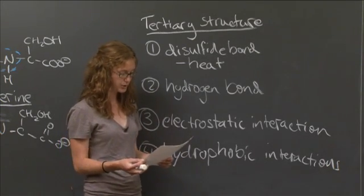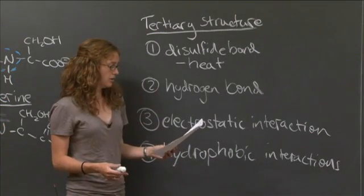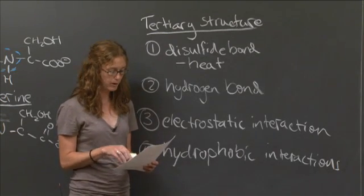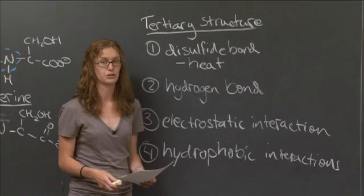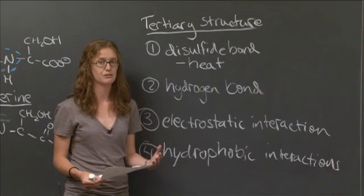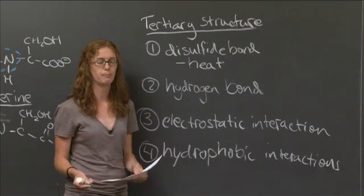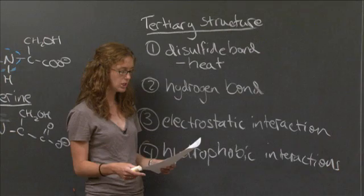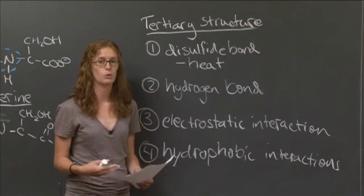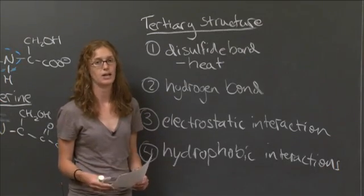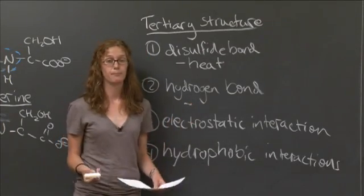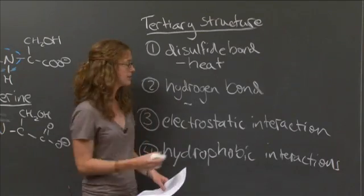Moving on to number two, we have hydrogen bonding between an alcohol group on a ring and a carboxy group. One way to disrupt that hydrogen bond would be to make the carboxy group no longer deprotonated. So if we put back the hydrogen onto that oxygen, it will become less partially negative and have a lower interaction with that hydrogen. To protonate that carboxy group, we want to make the solution more acidic — we can add acid.